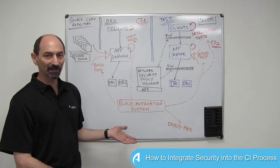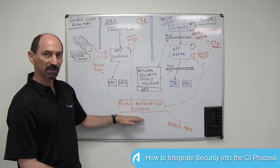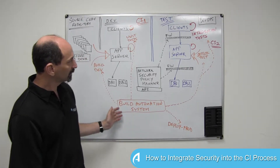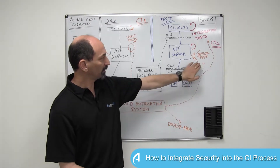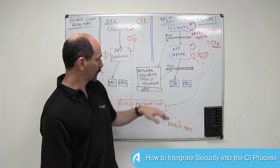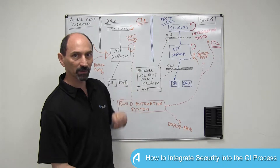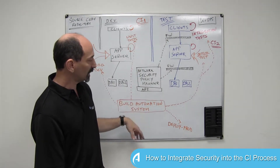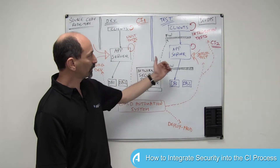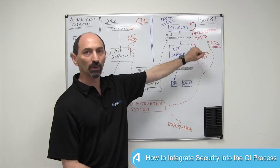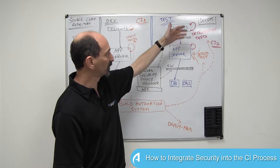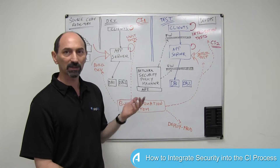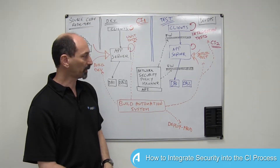Then, typically every night, the build automation system takes the code developed by all the developers that day, and activates a deployment onto the test environment of all the code that was generated that day, and runs a nightly suite of tests. This is the CI2 cycle of tests, typically integration tests and more heavyweight testing to test that the functionality of the application as a whole is doing what it's supposed to.